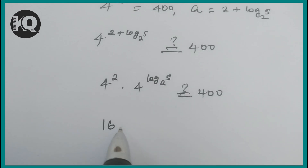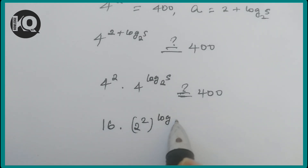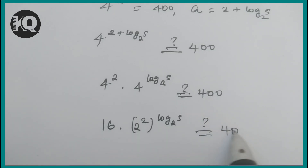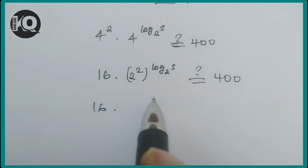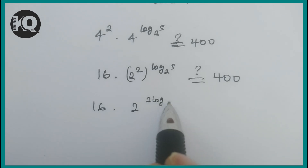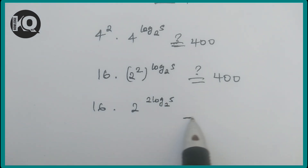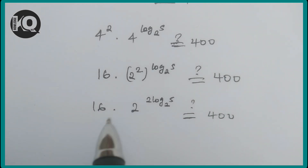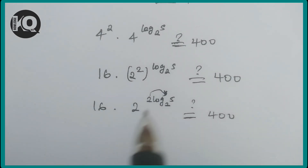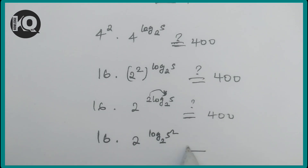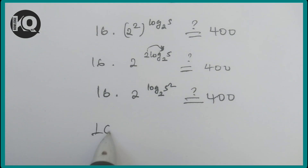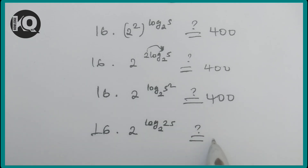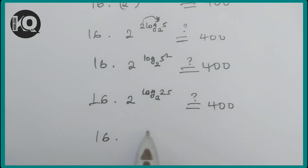Rewrite 4 as 2², so 4^(log₂(5)) = (2²)^(log₂(5)) = 2^(2·log₂(5)) = 2^(log₂(5²)) = 2^(log₂(25)). So we have 16 × 2^(log₂(25)).